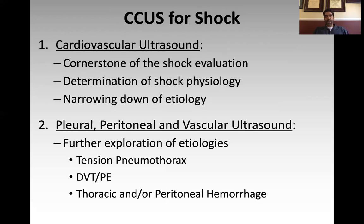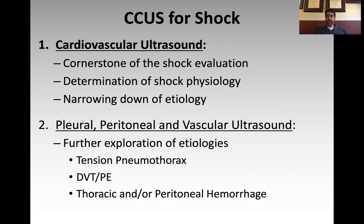Breaking down the mechanics of assessing someone in shock: you start with your cardiac ultrasound as the cornerstone of your shock evaluation — look at the heart, determine the physiology, identify a specific etiology. Based on what you see, you branch into other ultrasound modalities. For example, if you see a hyperdynamic LV and dilated IVC in a patient with thoracic trauma, look for pneumothorax using lung sliding or lung point. If you see a dilated RV in someone too unstable for CT, looking for a DVT is a good next step. Cardiac assessment is your cornerstone; then branch out to other modalities.